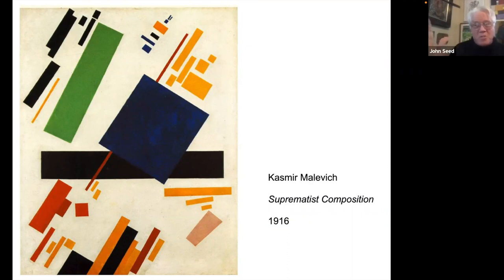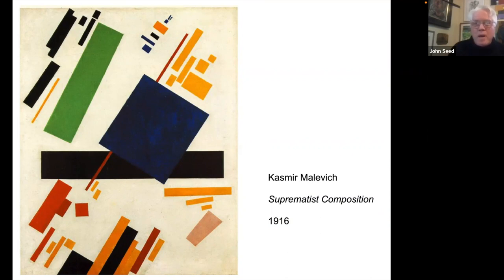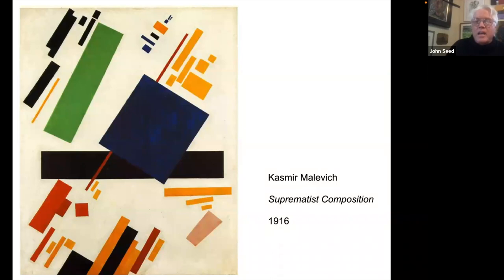We're getting to abstract expressionism. Malevich was very close to non-objective, although some people might say they see an architecture in his suprematist compositions. But he truly was making an effort to eliminate imagery — he wanted a kind of purity, just to get down to a new grammar. He saw art in a grammatical way, as a kind of language that was modular and interchangeable.